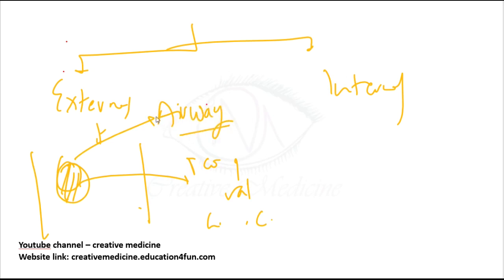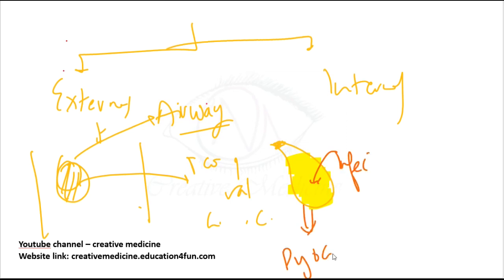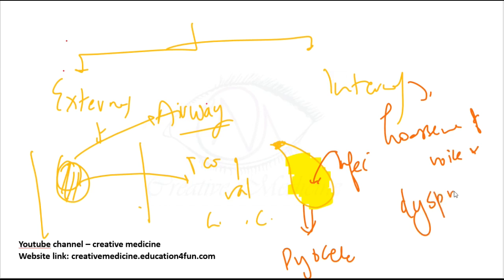If the external laryngocele is larger, it can obstruct the airway. If the neck of the sac is blocked, this results in accumulation of fluid in the sac, then infection occurs, and finally it gets converted into a pyocele. In internal laryngocele, the patient presents with hoarseness of voice and dyspnea due to pressure changes.